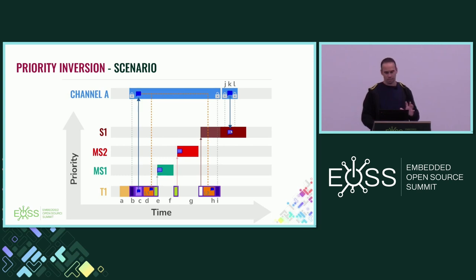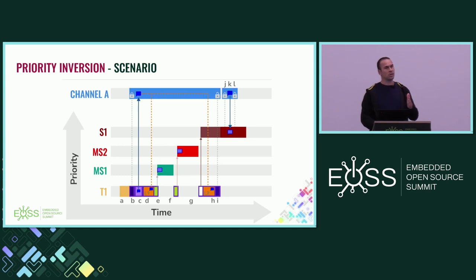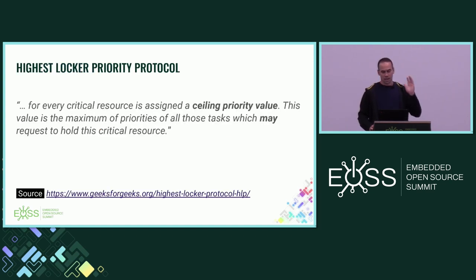We have three problems here: priority inversion because S1 — the highest priority thread — is the last to consume the message; two preemptions; and a listener running after the observers, which is not good. To solve that, we implemented the Highest Locker protocol. Before, we used a mutex, but priority inheritance was not helping because MS1 and MS2 are not part of the mutex wait queue, so the priority inheritance of mutex was not working for that scenario. So I removed the mutex and replaced it with semaphores, implementing a Highest Locker Priority protocol.